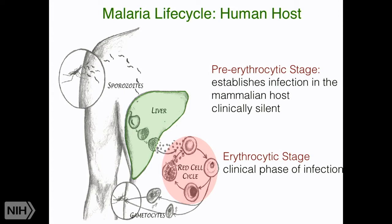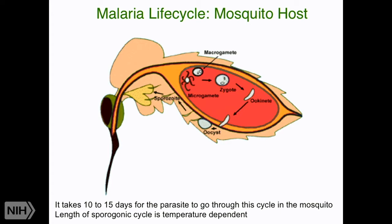There is a third component to the life cycle: in the mosquito. Some of these red cell stages differentiate to gametocytes — sexual stages — that are taken up by a mosquito when she takes her blood meal. In the mosquito, these stages undergo sexual reproduction: the gametocytes turn into gametes to form a zygote, okinate, and eventually an oocyst on the outside of the mid-gut wall, in which sporozoites develop and then go to salivary glands to be injected into the next host.